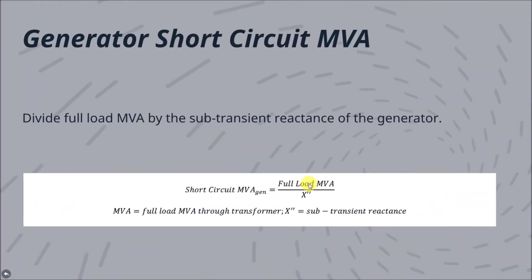For the generator, the short-circuit MVA value is found by dividing the full-load MVA of the generator by the generator's sub-transient reactance. Do not use the transient reactance or steady-state reactance, since the transient and steady-state reactance values do not give you the instantaneous short-circuit current.